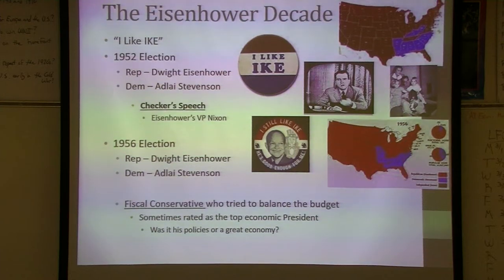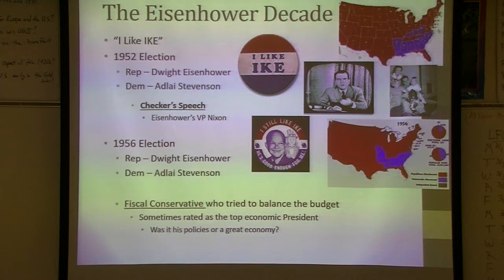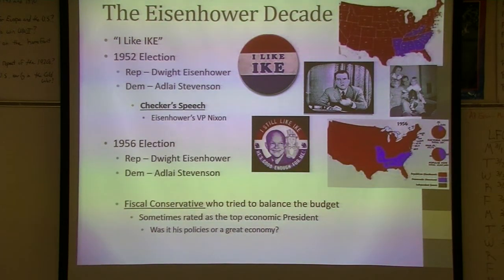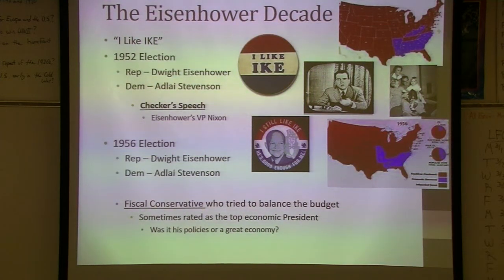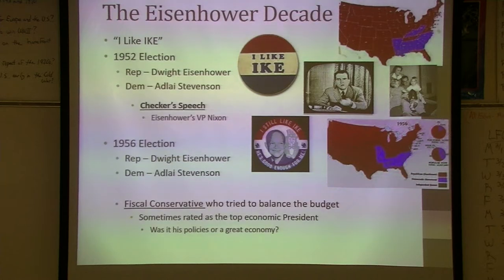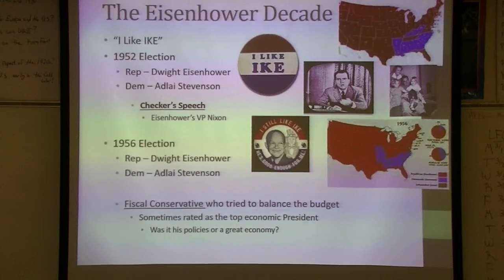Richard Nixon had been accused of things involving money that may have been illegal. He went on TV — and he used TV very effectively — and gave a speech. He talked about how the only thing he'd ever gotten that could be considered a gift was this dog, and it wasn't illegal, and he wasn't giving it back. Everyone focused on the dog, checkers. That's where you see the picture of Checkers with the kids, and it was a great political move because all the other allegations just kind of vanished.